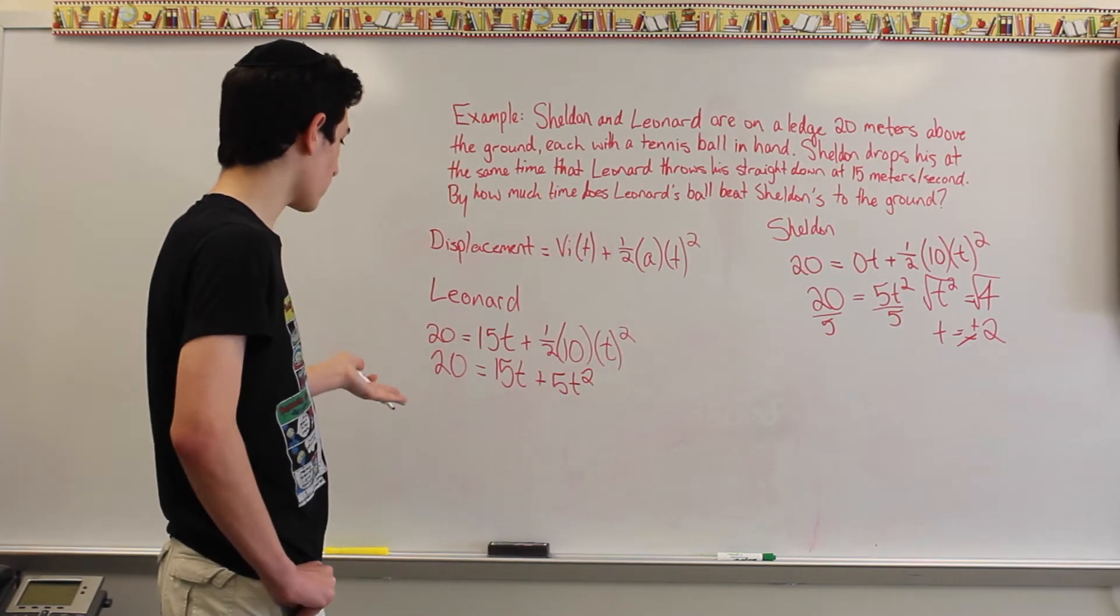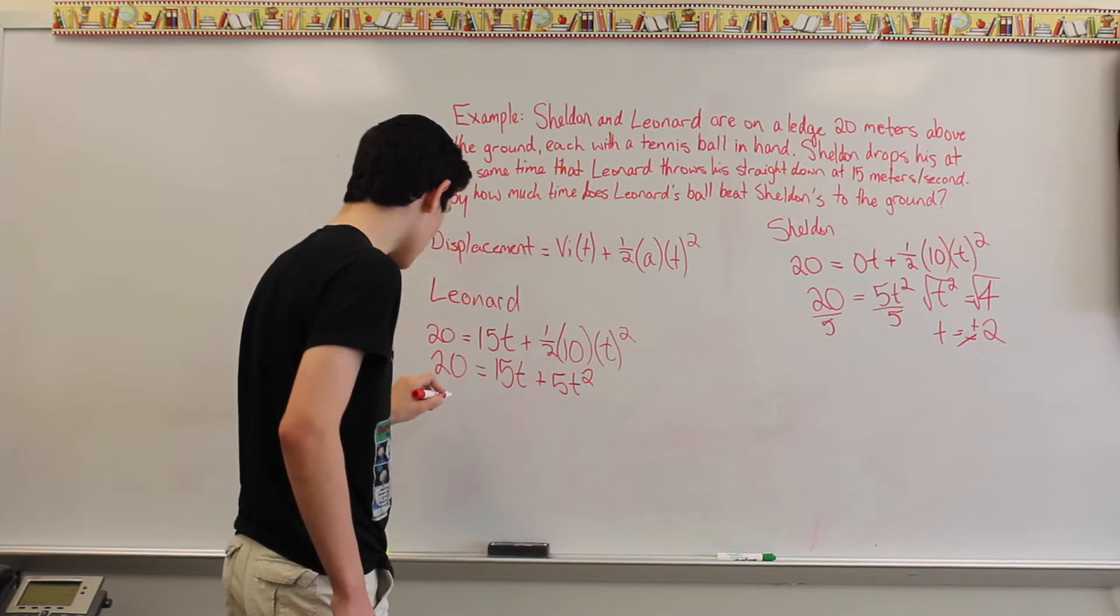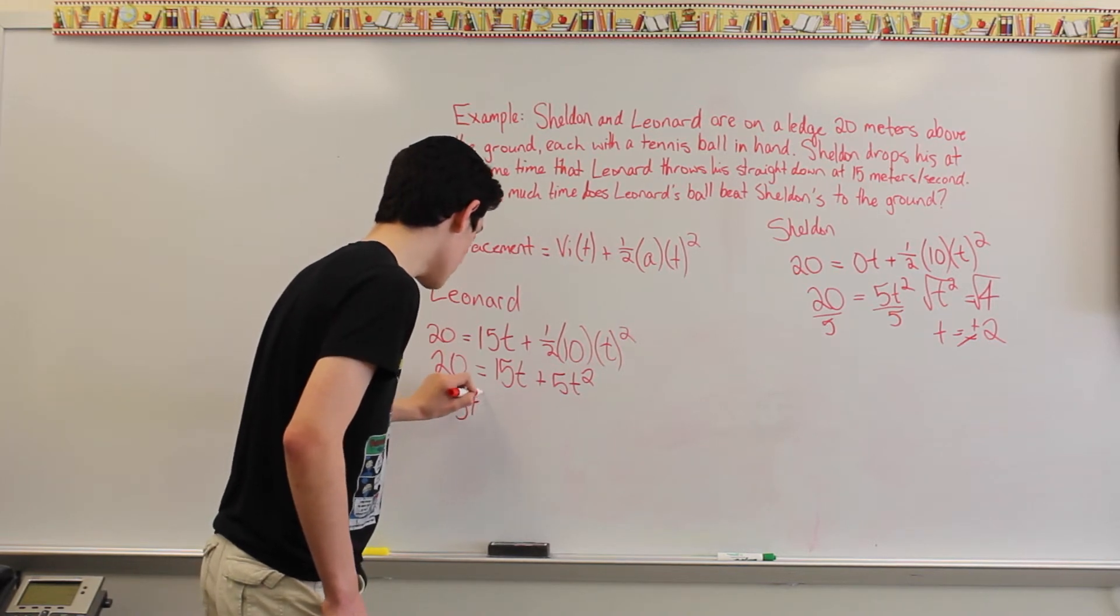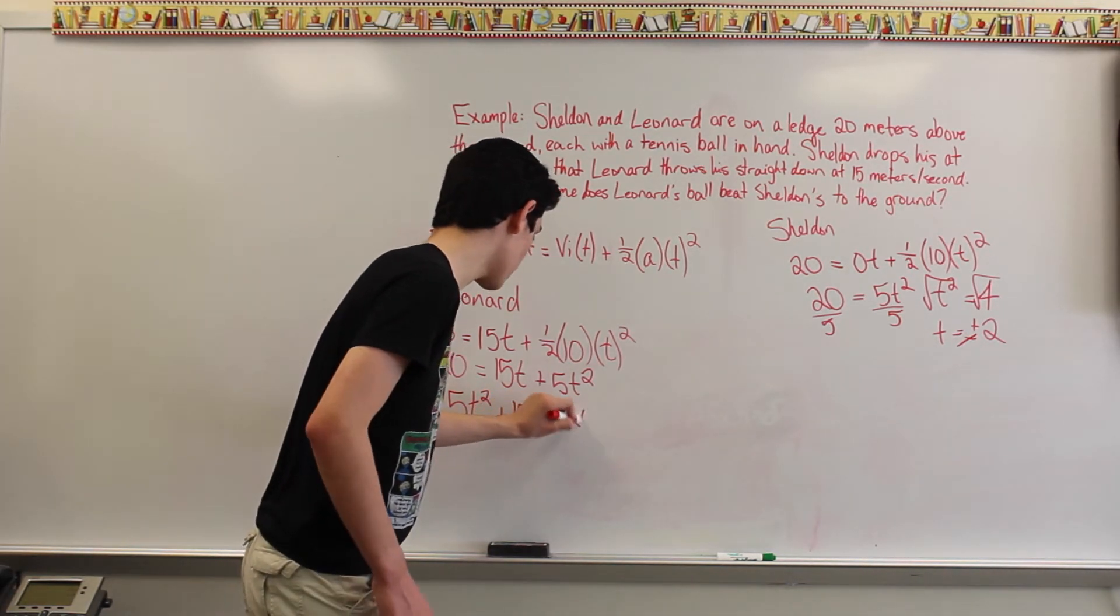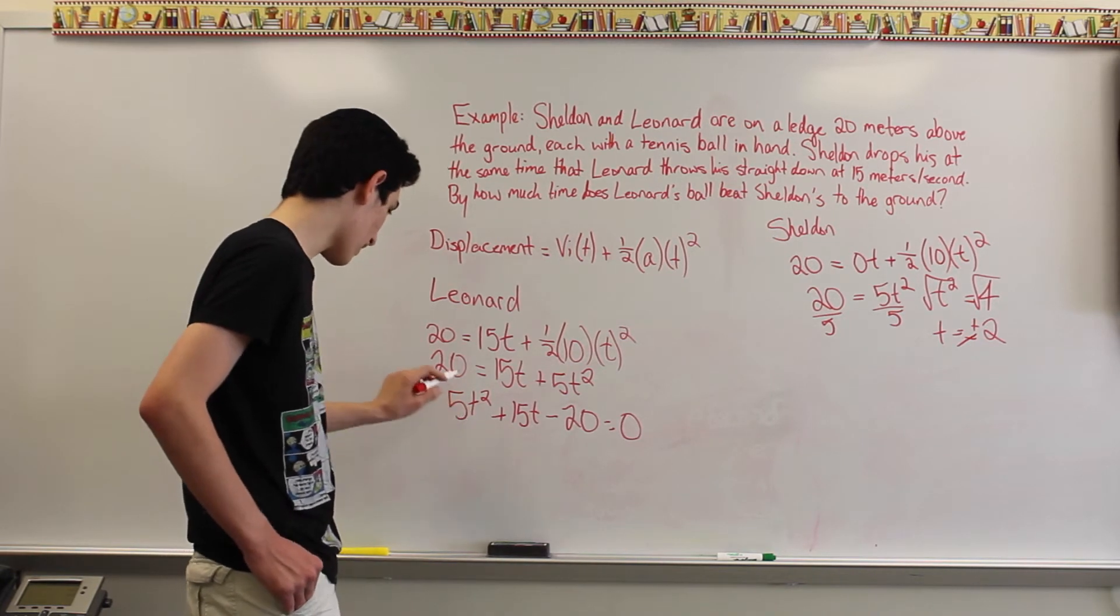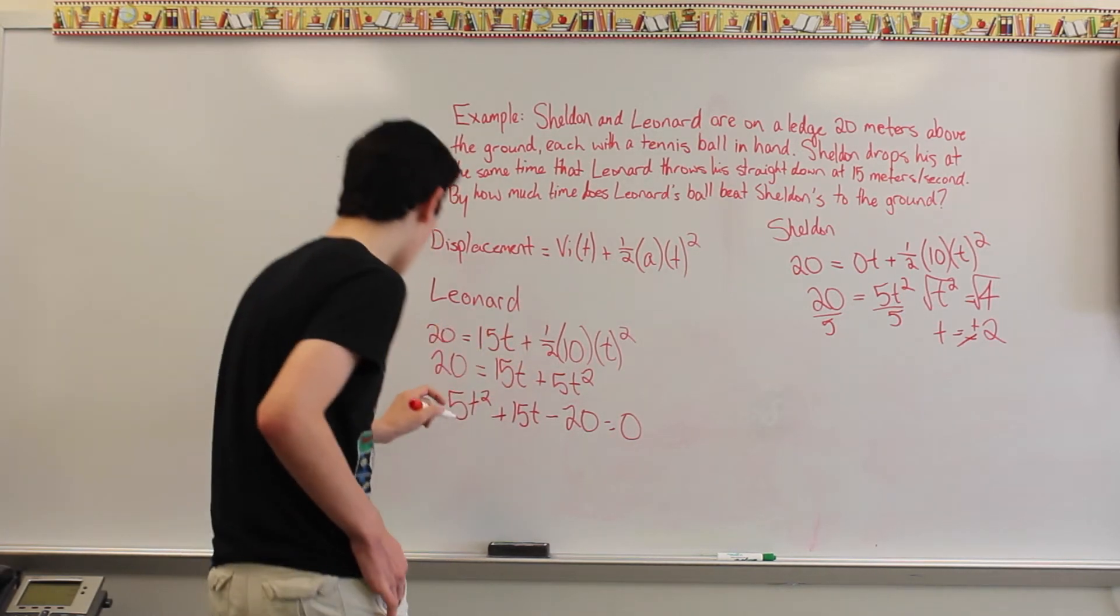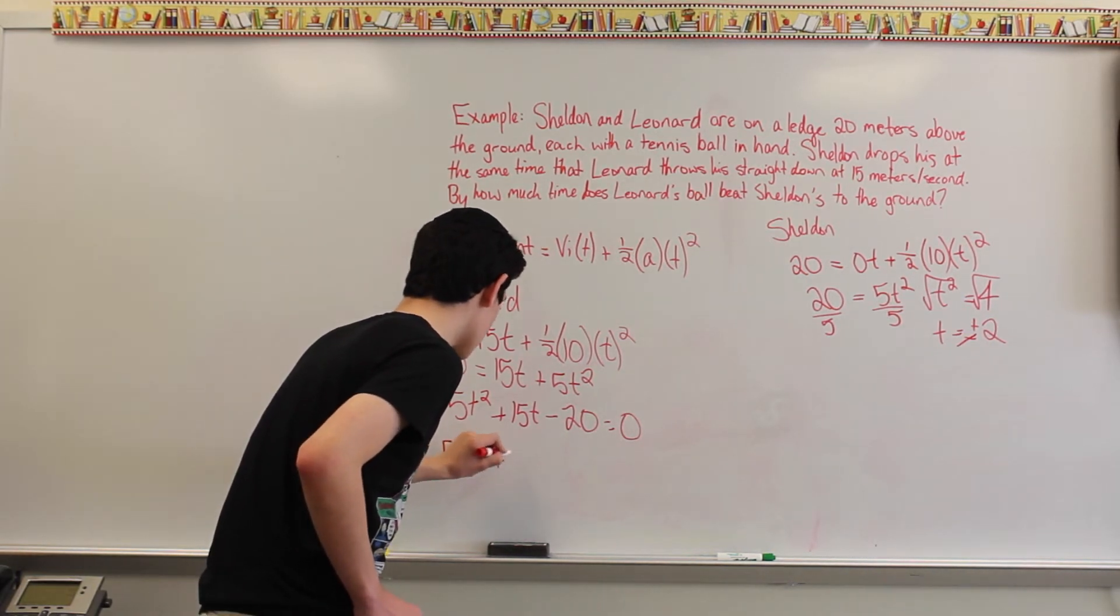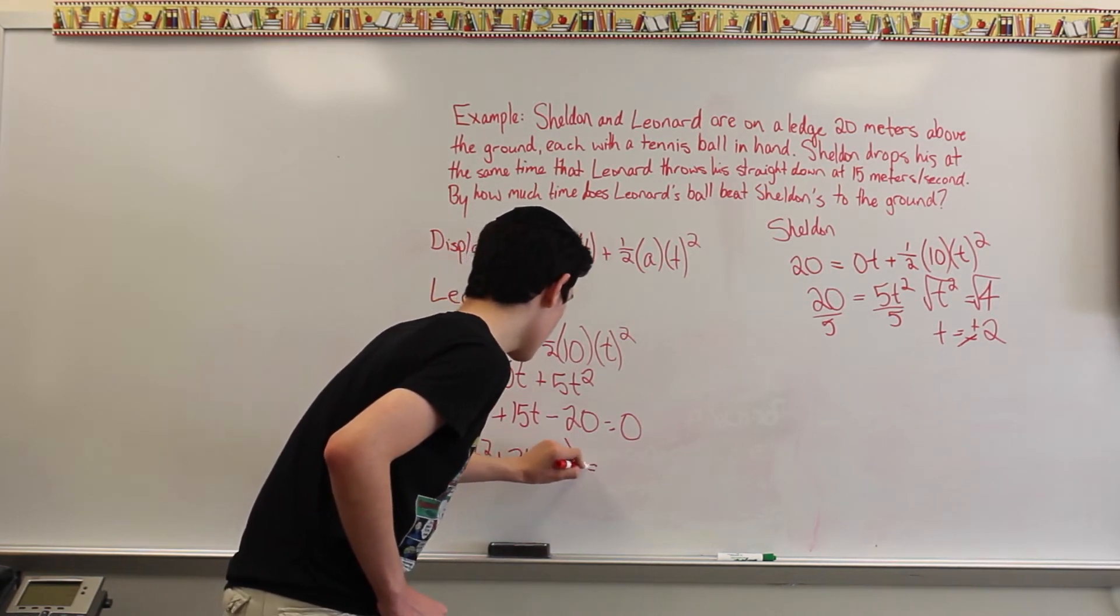Now, the way to solve this here is to make this into a quadratic. So, if we subtract 20 from both sides and then put it into standard form, we have it as 5t squared plus 15t minus 20 equals 0. Now, we have a common factor of 5 amongst all three, so we can go ahead and factor it out. So, 5 times t squared plus 3t minus 4 equals 0.